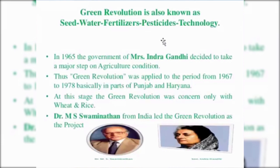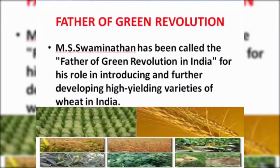The effect of green revolution was mainly concerned with wheat and rice cultivation. Dr. M.S. Swaminathan led the green revolution in India, and that's why he is known as the father of green revolution in India. He introduced the high yielding variety of wheat in India. M.S. Swaminathan is known as the father of green revolution in India for his role in the green revolution.